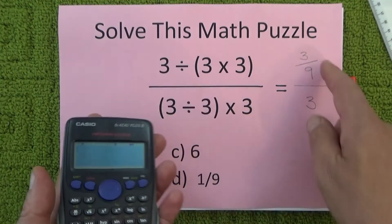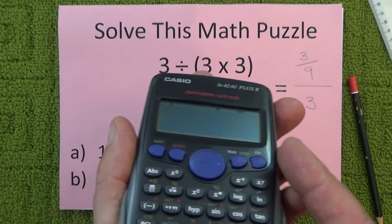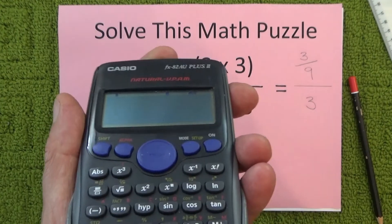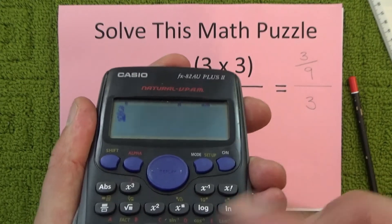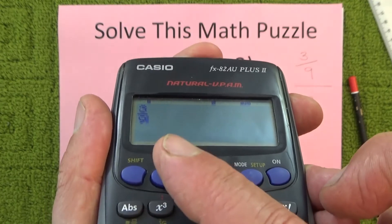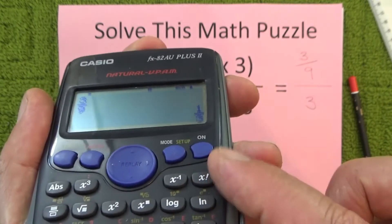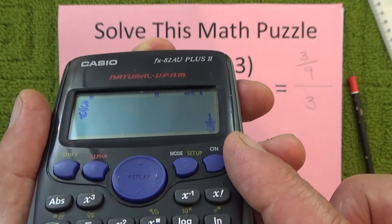Okay, so I'm going to put this into my calculator and see what answer I get. So it's 3/9ths, and I'll hit equal there and that simplifies down to 1/3.